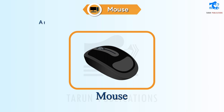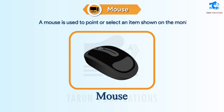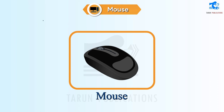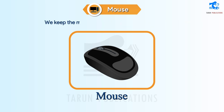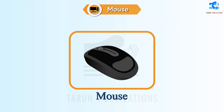Mouse: A mouse is used to point or select an item shown on the monitor. The mouse usually has two buttons and a wheel in the middle. We keep the mouse on a mouse pad for smooth movement.